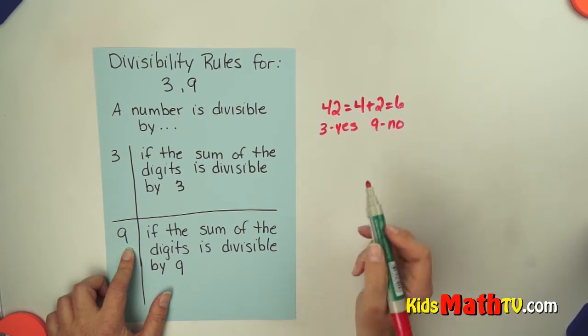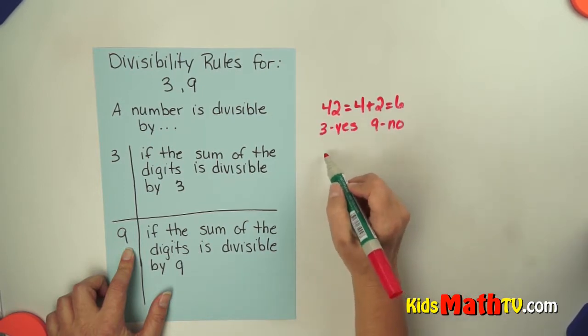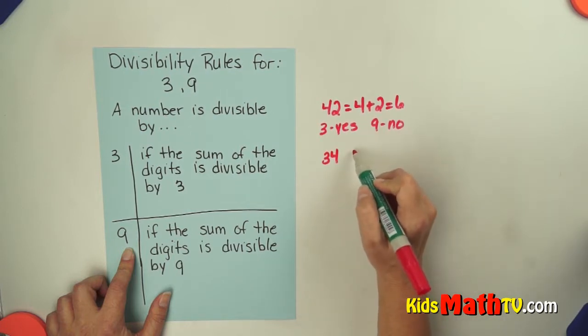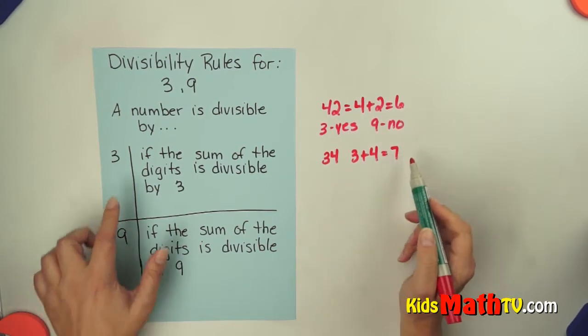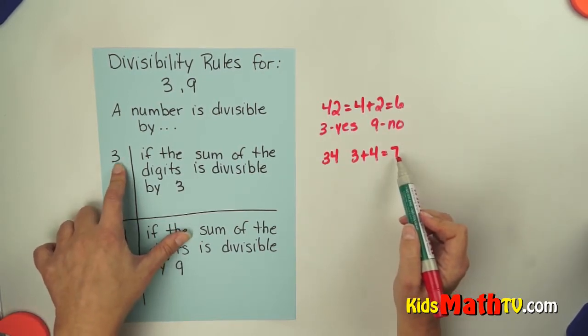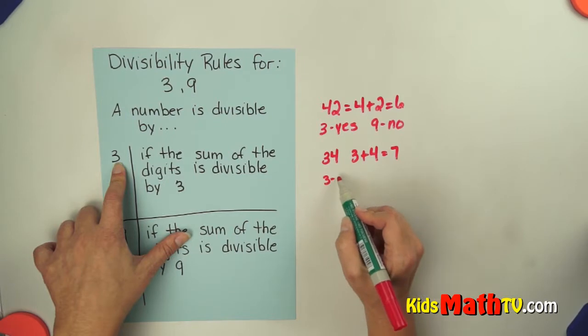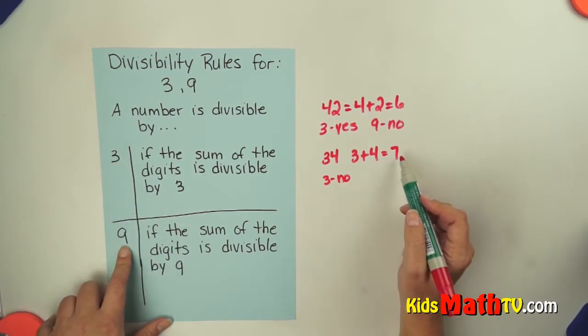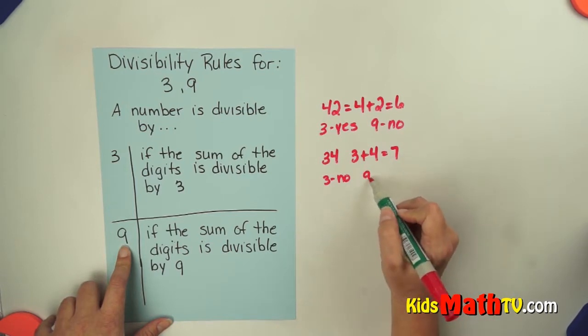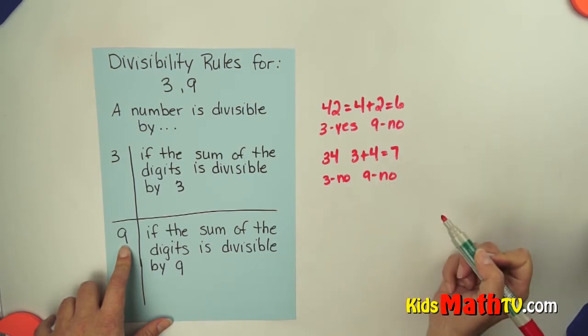Let's try a different number. We have the number 34. If I add those digits, 3 plus 4, I get 7. 7 does not divide by 3 evenly, so it is not divisible by 3. 7 also does not divide by 9 evenly, so it is not divisible by 9.